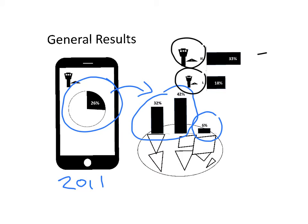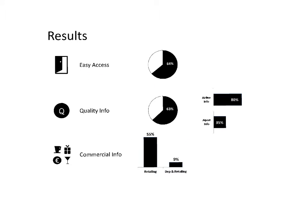The results in the three objectives defined were the following. First, it was easy access in 64% of the airport mobile websites evaluated. Second, on average, 63% of the information evaluated was available on those mobile websites.